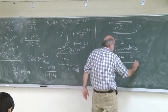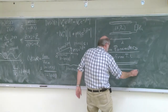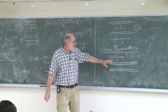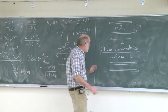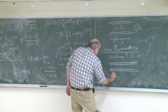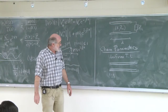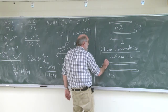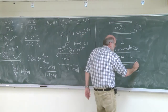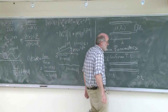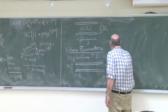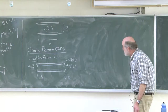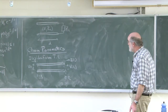We look at a section of transmission line without worrying about what is connected to either end—it might be a generator, an impedance, or both. At the left end, position Z = Z₁, there is a voltage and a current. At the right end, position Z = Z₂, there is also a voltage and a current. By convention, the reference direction for current is always in the positive Z direction.